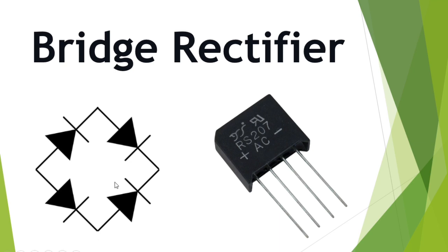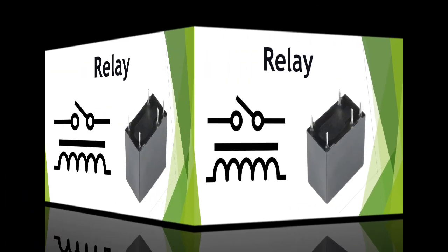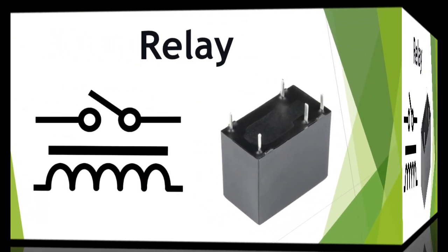As you can see, the bridge rectifier contains four diodes inside it. Here we have this terminal which means plus. This terminal is connected to the capacitor, basically to the filtering capacitor. And here we have minus.